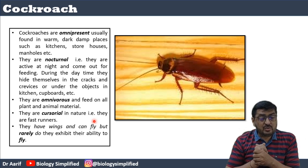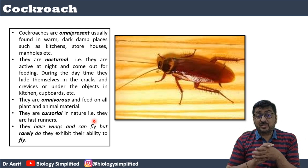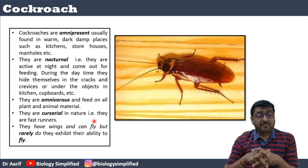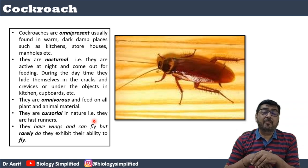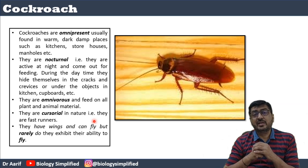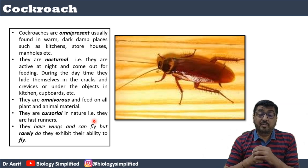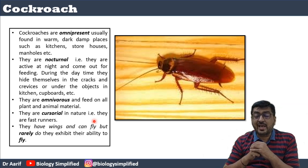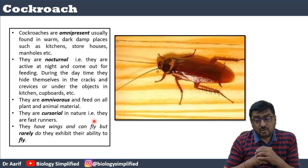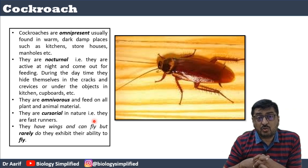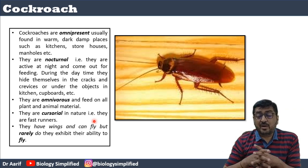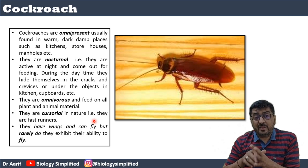Cockroaches are cursorial — they are fast runners. They have wings and can fly but rarely exhibit the ability to fly; mostly they use their legs for locomotion. So there is no such thing as a flying cockroach — cockroaches have wings but they rarely use them.